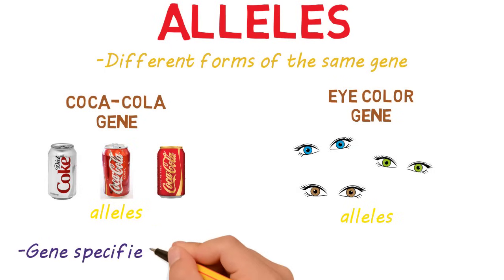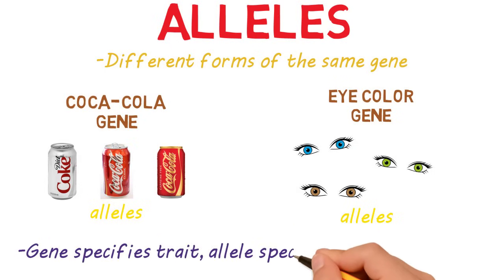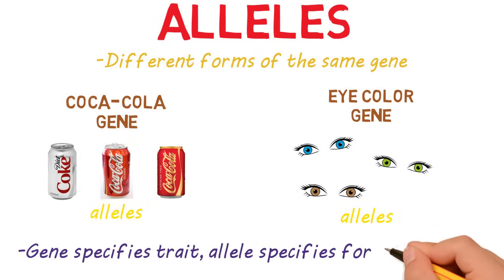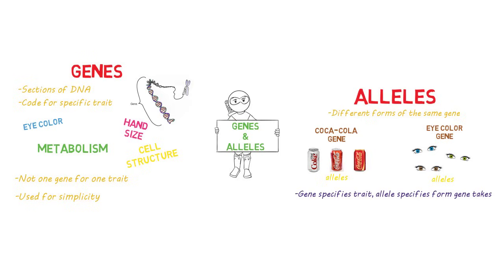Just remember: the gene specifies which trait, and the allele specifies what form the gene takes. Check out my other genetics videos, and if you have any questions, throw them in the comments. Thanks.